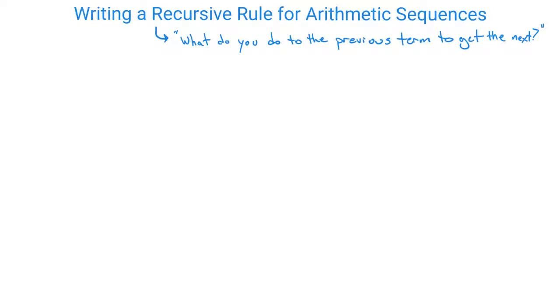A recursive rule is essentially asking, what do you do to the previous term to get the next? So it's more looking at the pattern of what you do and not actually coming up with a rule for how to get that term itself. It's just what are you doing each time.